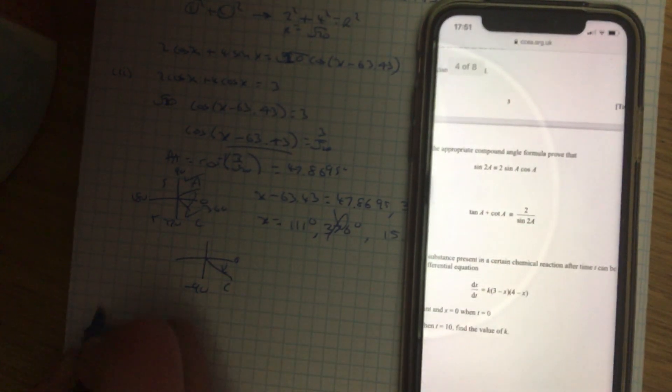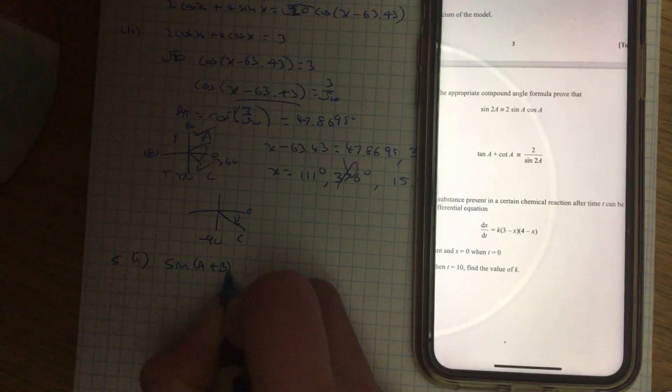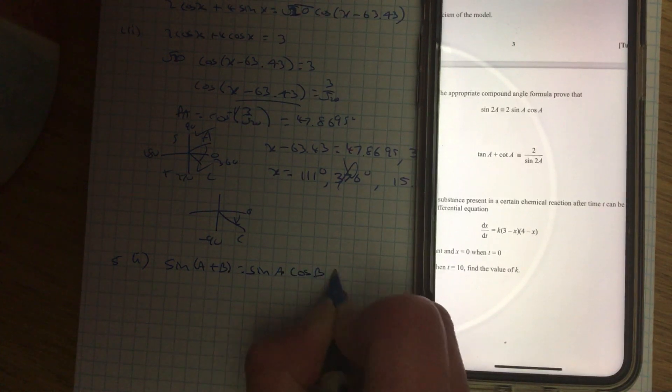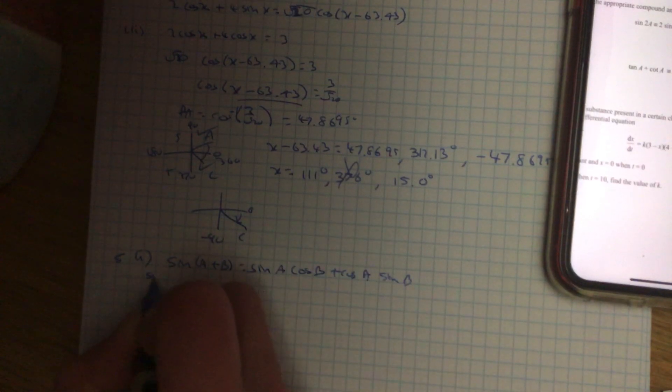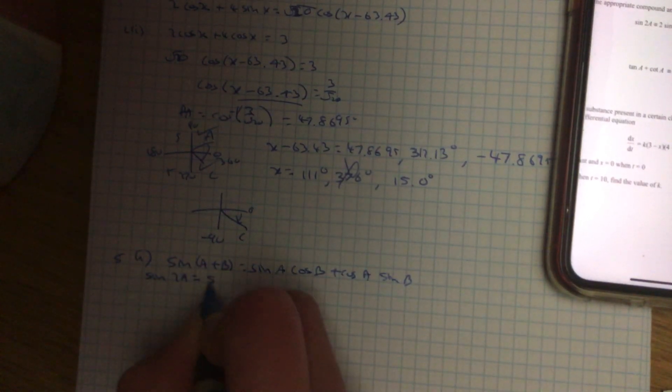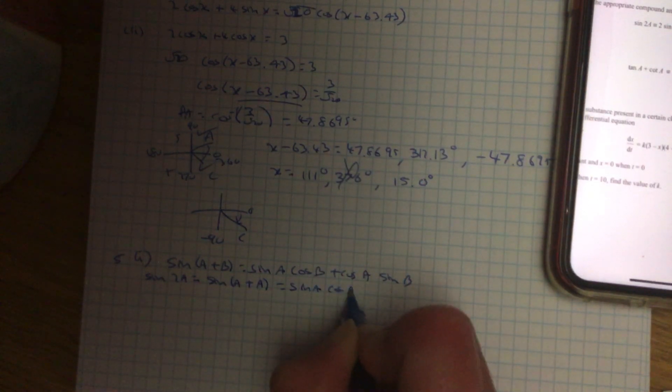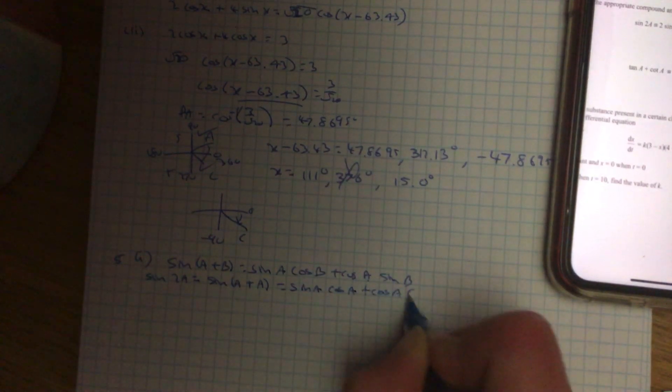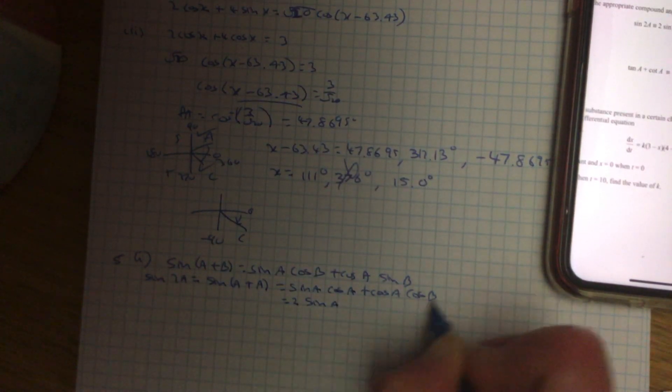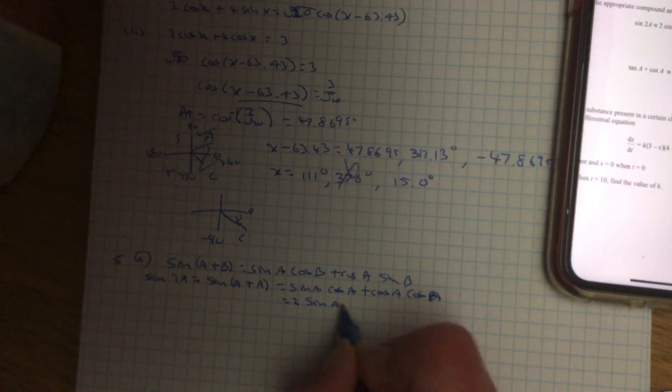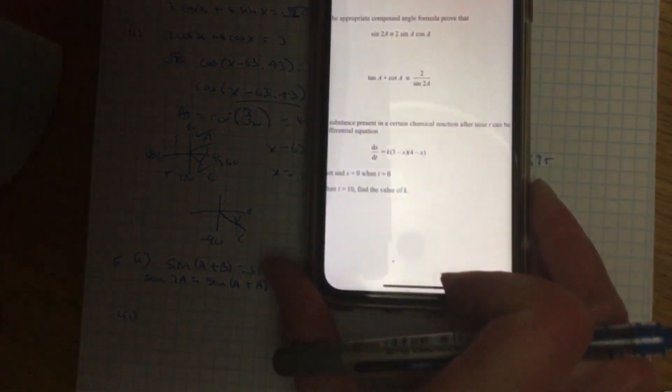Prove your double angle, so sin 2a, so I'm going to start with sin a plus sin b, the expansion formula, sin a cos b plus cos a sin b. And I have got sin 2a, which is the same as sin a plus a, so sin a cos a plus cos a cos b, which is 2 cos a sin a cos a, which is what they're trying to prove.